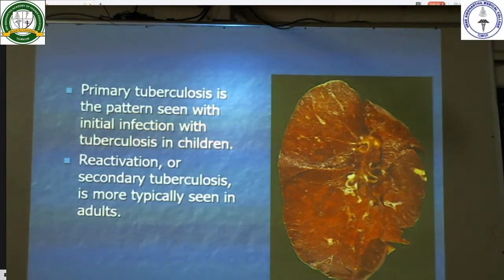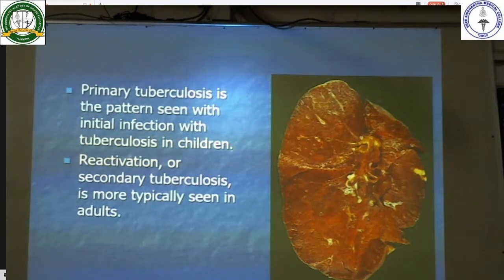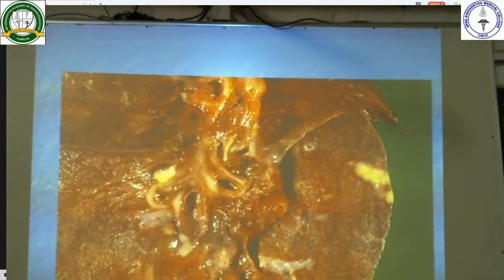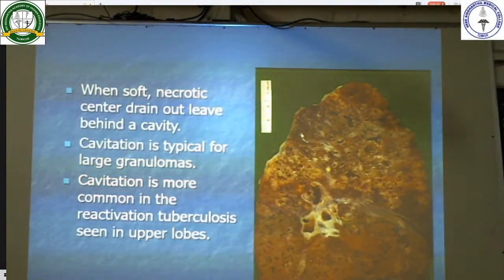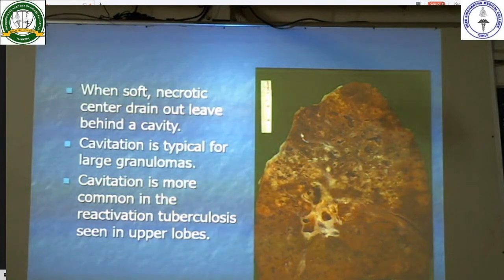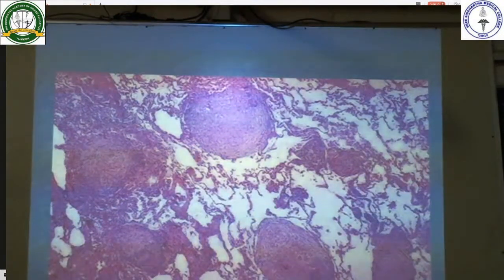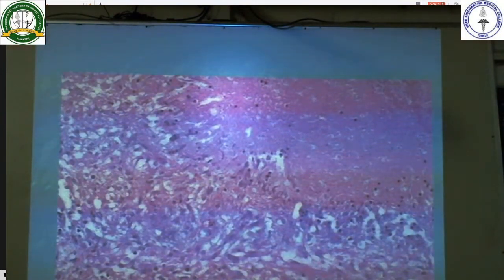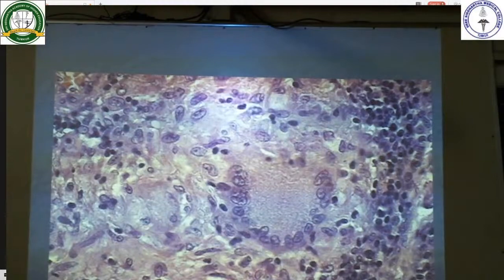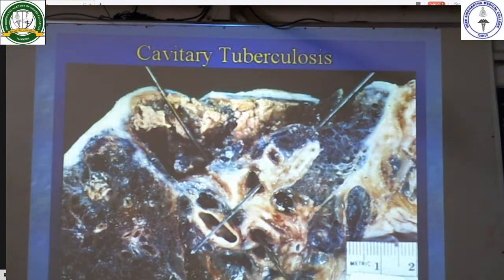This is the primary or Ghon complex — the pattern seen with initial TB infection in children. This is the primary Ghon focus and this is the Ghon complex. This is a cross-section specimen of cavitary tuberculosis, where the soft necrotic centre drains out leaving behind a cavity. Cavitation is typical for large granulomas and is more common in reactivated tuberculosis seen in the upper lobes. These are multiple granulomas seen in the lung showing central caseous necrosis and a Langhans giant cell.